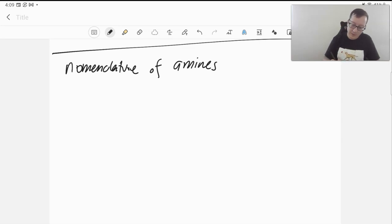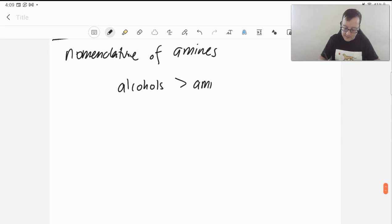Amines are thankfully very easy to name. We're going to see that they are going to be below alcohols in our list. So that includes everything above alcohols - nitriles, acids, esters, aldehydes, all of those are already above alcohols. Amines are just one step below them, and amines are actually going to be our lowest kind of functional group that could be a suffix.